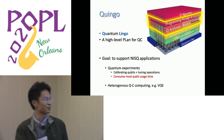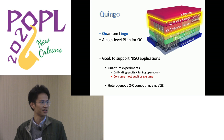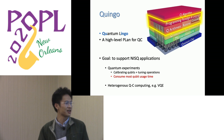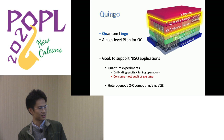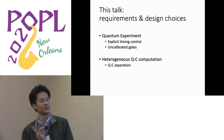We observe two important NISQ applications. One is quantum experiments, which means calibrating qubits and tuning operations — we find that quantum experiments consume most qubit usage time in existing quantum devices. Another important NISQ application is algorithms that utilize heterogeneous quantum and classical computing, such as VQE.